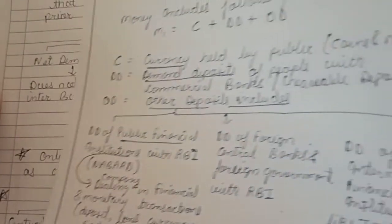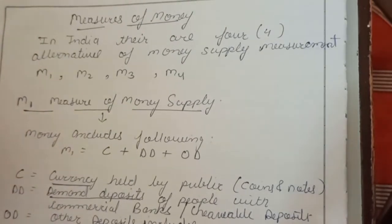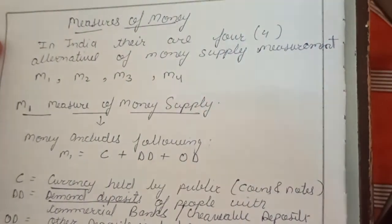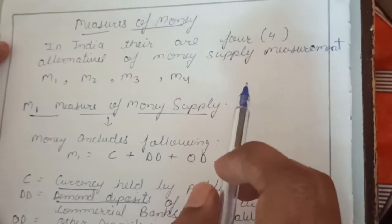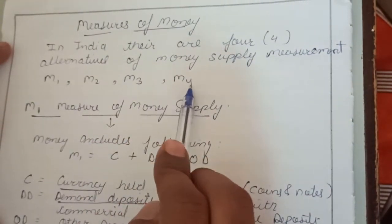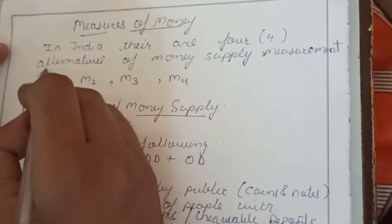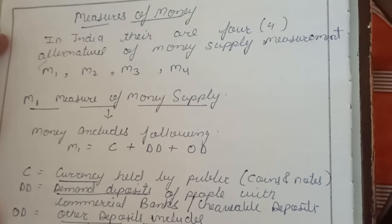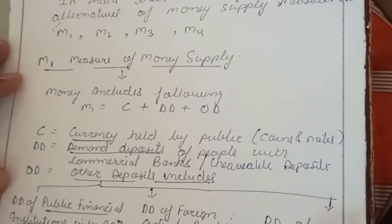The next topic is measures of money — how to measure the money. In India, we have four alternative measures of money supply: M1, M2, M3, and M4. In our syllabus, only M1 is required, but later in the lecture I will also briefly explain M2, M3, and M4.